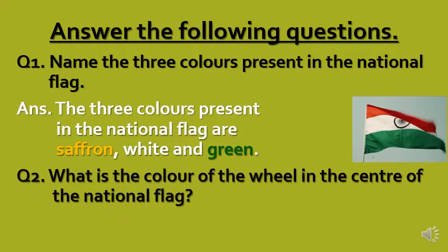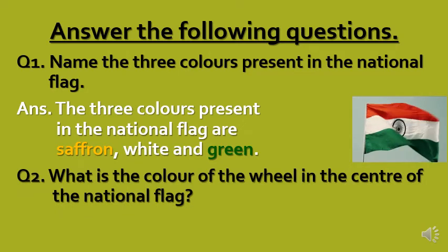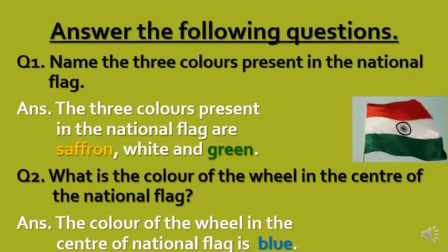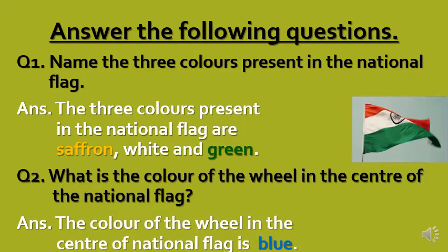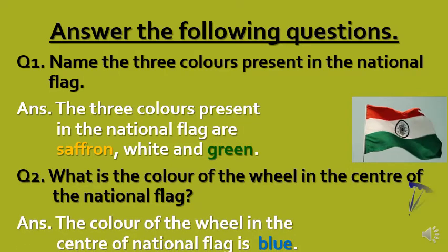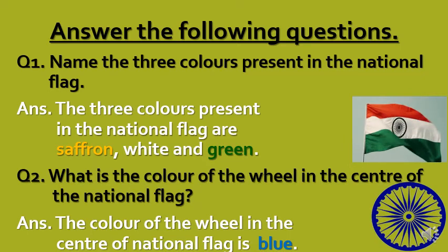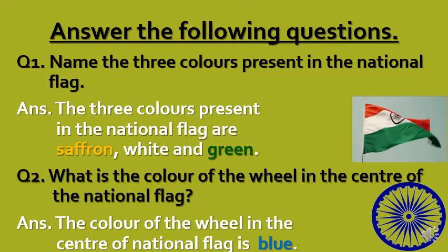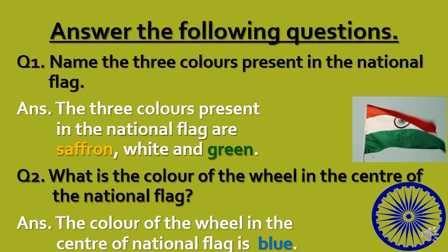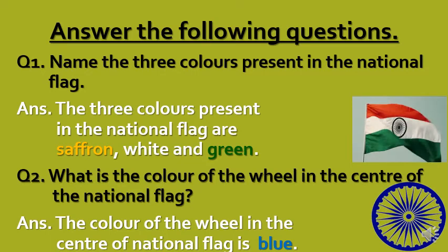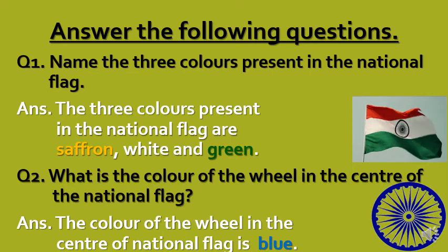Question 2: what is the color of the wheel in the center of the national flag? The color of the wheel in the center of the national flag is blue. You can see the chakra or wheel in the picture, and this wheel has 24 spokes.